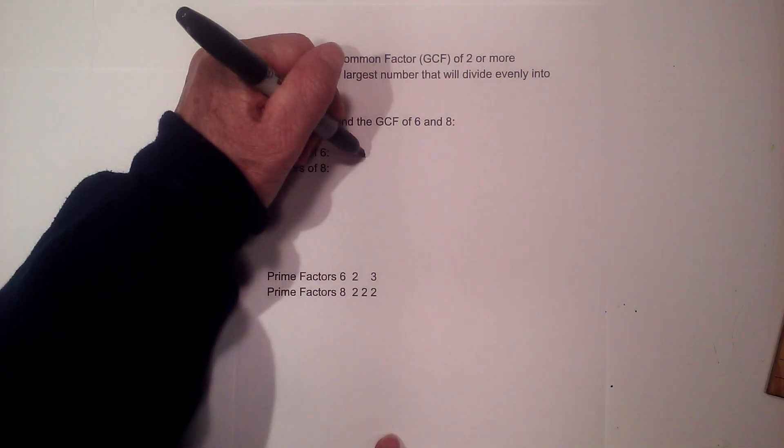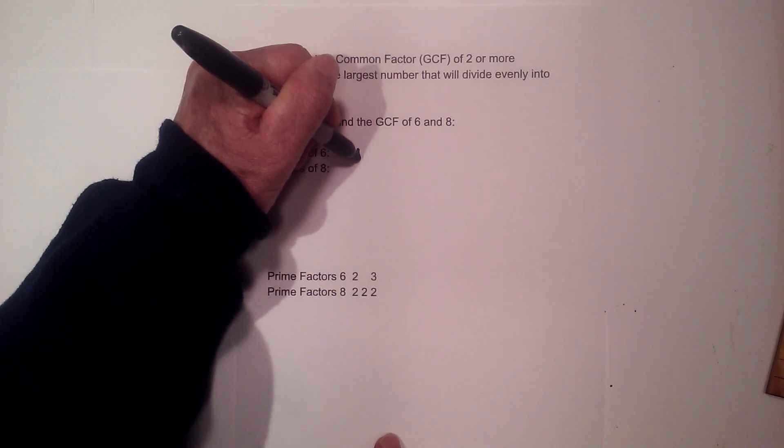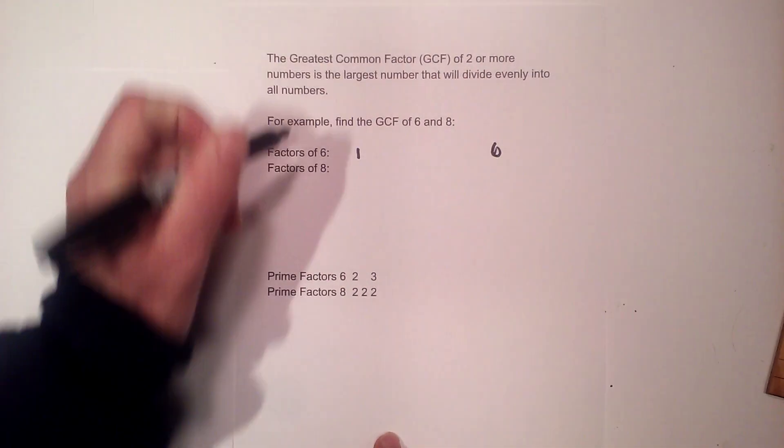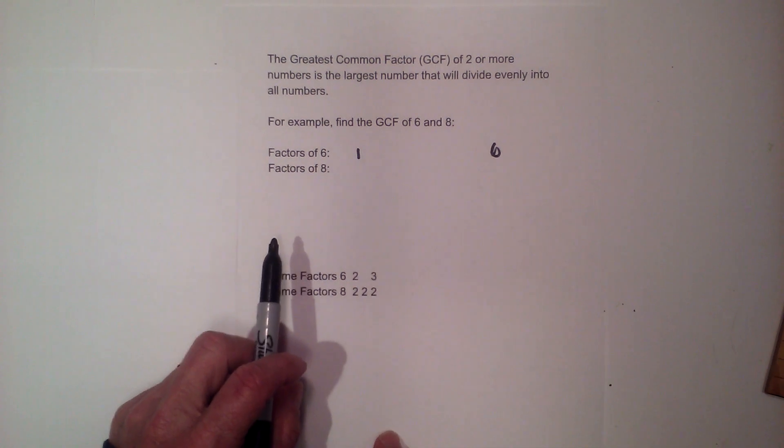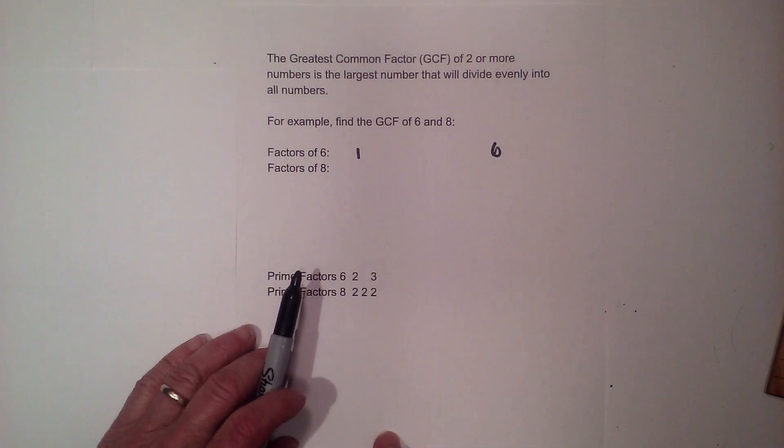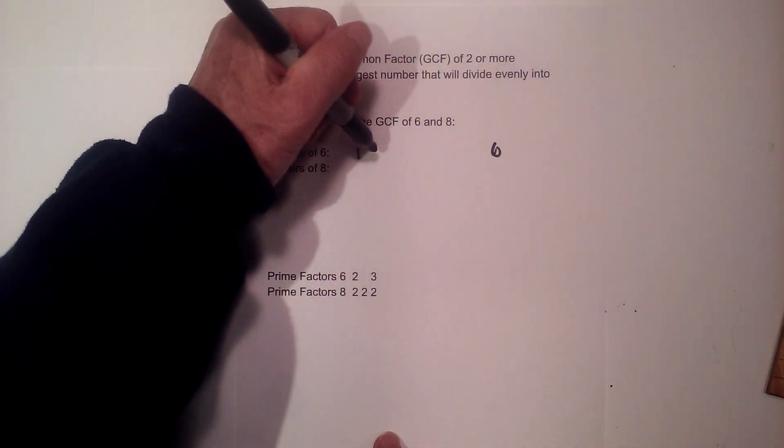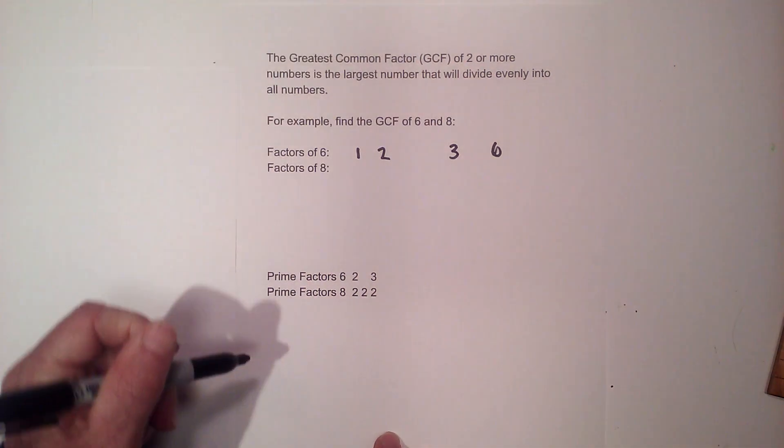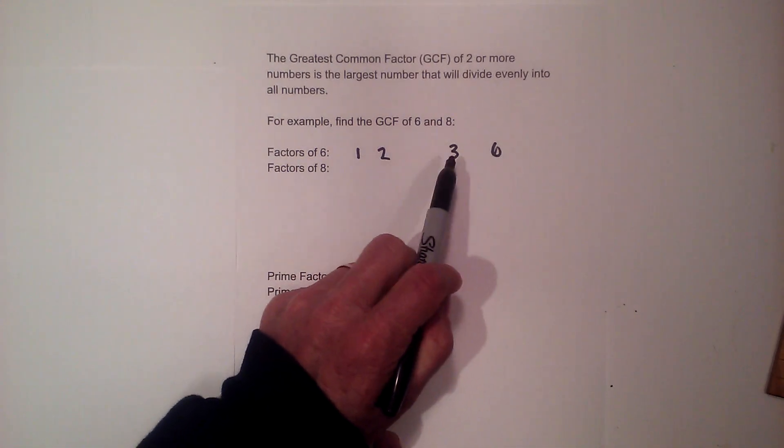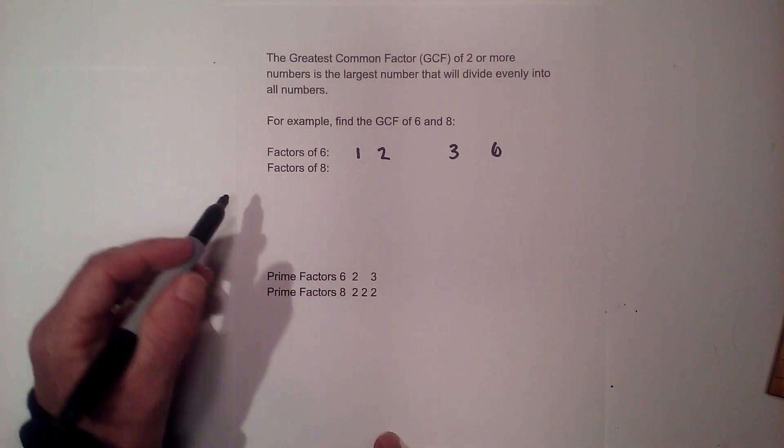The technique I like to use is I write 1 times 6. Then I find all the numbers in between 1 and 6 that multiply together and equal 6. So will 2 go into 6? Yes, 2 times 3 will go into 6 and there's no number in between 2 and 3 so I know that's all the factors.